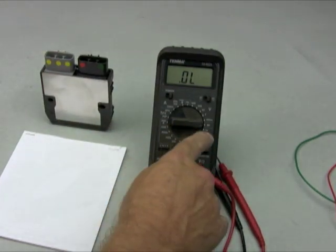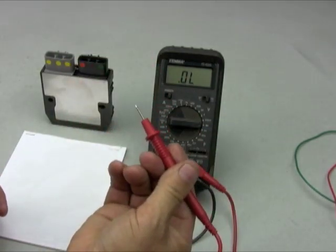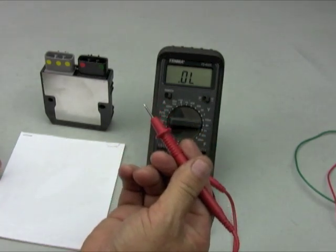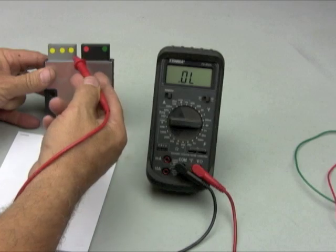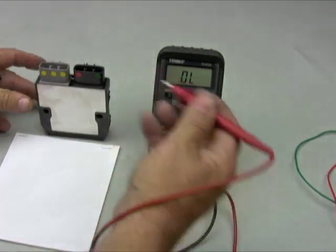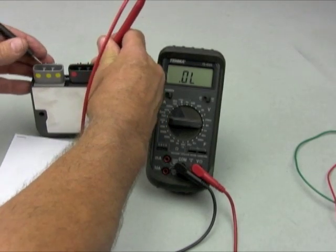We're going to use a multimeter set on the diode check. We're going to start with our positive meter lead, and I have this marked for you so you got negative, positive, and your three yellows. So we're going to start going with the positive to the negative on this and see what numbers we get.